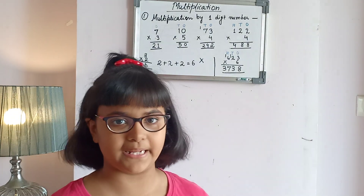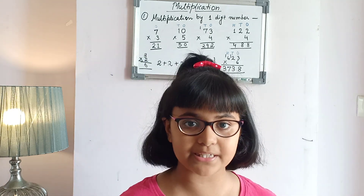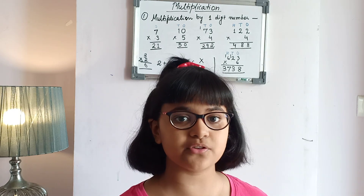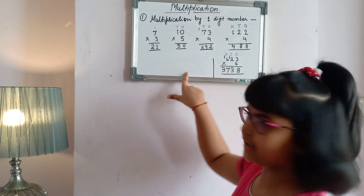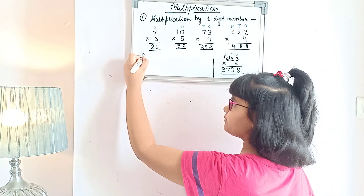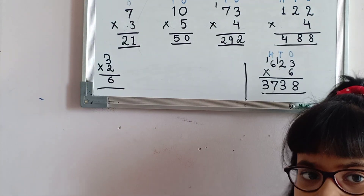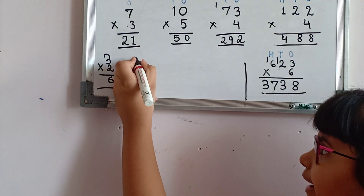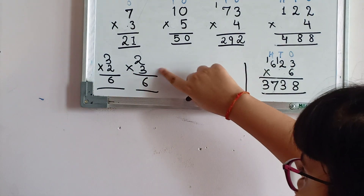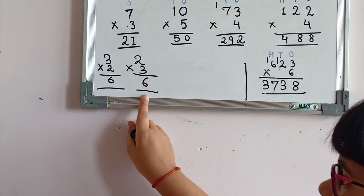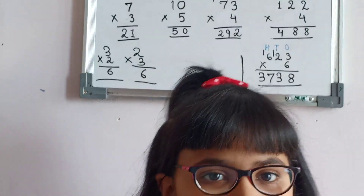These were all questions of multiplication by one-digit numbers. Remember: even if the order of the multiplication numbers is changed, the product will be the same. For example, 3 multiplied by 2 is equal to 6, and 2 multiplied by 3 is also equal to 6 — the product stays the same when digits are interchanged.